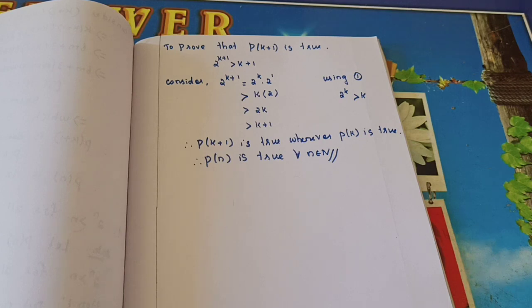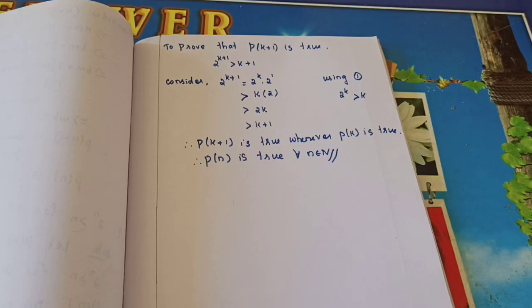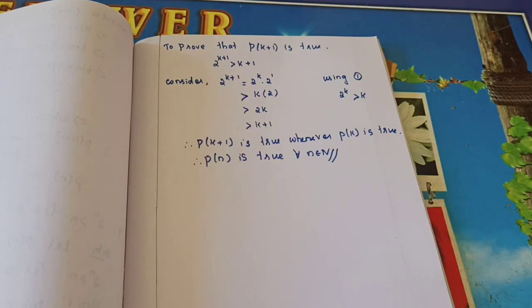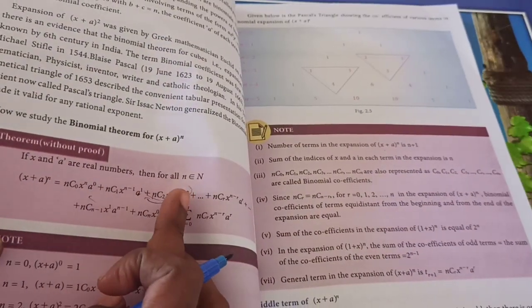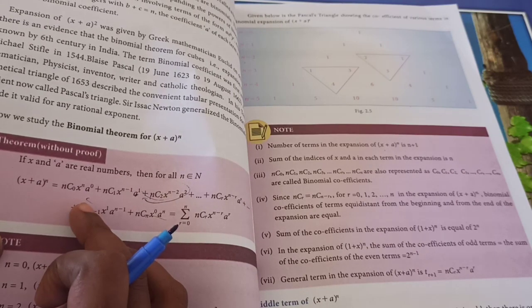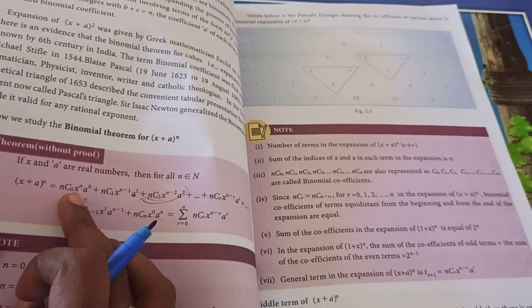Our next section is binomial theorem. I am just giving the formula today and problems we will see in the next class. Take your book to the binomial theorem section and put the heading 'Binomial Theorem'. There is one theorem without proof that is very important. If x and a are real numbers, then for all n belongs to ℕ, the expansion is: (x+a)ⁿ equals nC₀ xⁿ a⁰ plus...